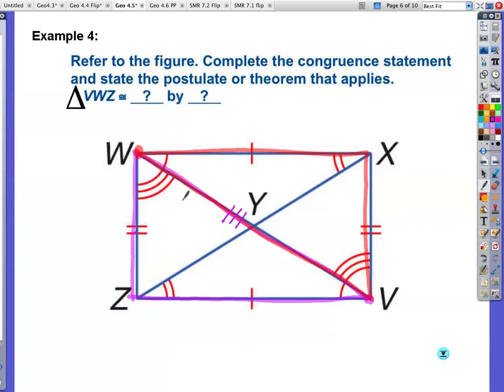So now let's check. Do I have one that works? It looks like I have angle, side, angle, which checks with this, which would be angle, side, angle. So they are congruent by angle-side-angle. I did not write down my congruency statement. So V matches with W, W matches with V, and then Z corresponds with X. So triangle VWZ is congruent to triangle WVX.